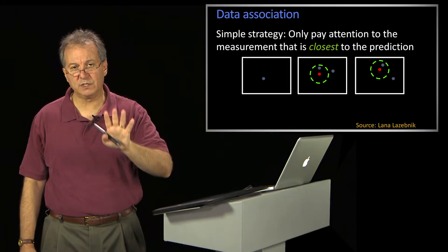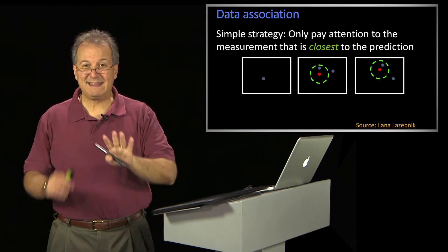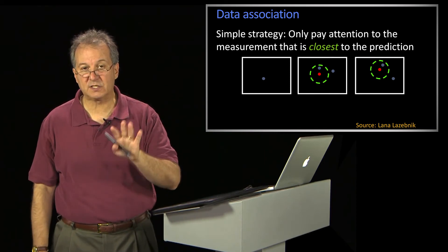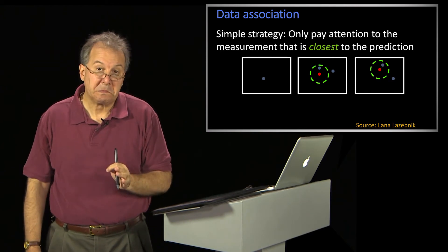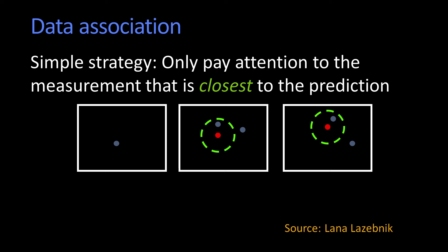So remember when we were tracking the contours for the condensation, Isard and Blake algorithm, right, they took the distance to the nearest strong contour as if they knew somehow that that was the right contour. They just made that assumption.